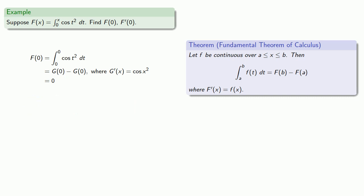How about f prime of 0? We can still rely on this version of the Fundamental Theorem of Calculus. Since f of x is the integral from 0 to x of cosine t squared dt, we find that f of x is g of x minus g of 0, where g prime of x is cosine x squared.